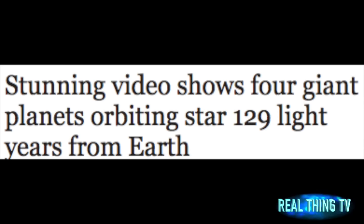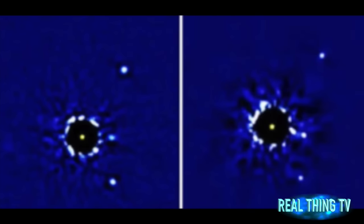Stunning video shows four giant planets orbiting star 129 light years from Earth. Astronomers have filmed four planets orbiting a star five times brighter than the Sun around 129 light years from Earth.